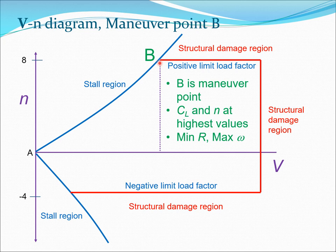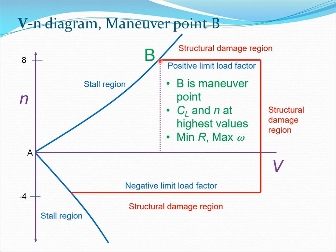There is a particularly important point: the maneuver point B. This point is at the intersection of the stall curve in blue and the structural damage line in red. At point B, CL equals CL_max and N is also at its highest value. Corresponding to this point is the minimum turn radius and the maximum turn rate, which we discussed in the previous two lectures as being very good for maneuverability in turning flight and also in pull-up and pull-down. If you want to perform any of these maneuvers, you want to be at maneuver point B to get the maximum capability out of the aircraft.